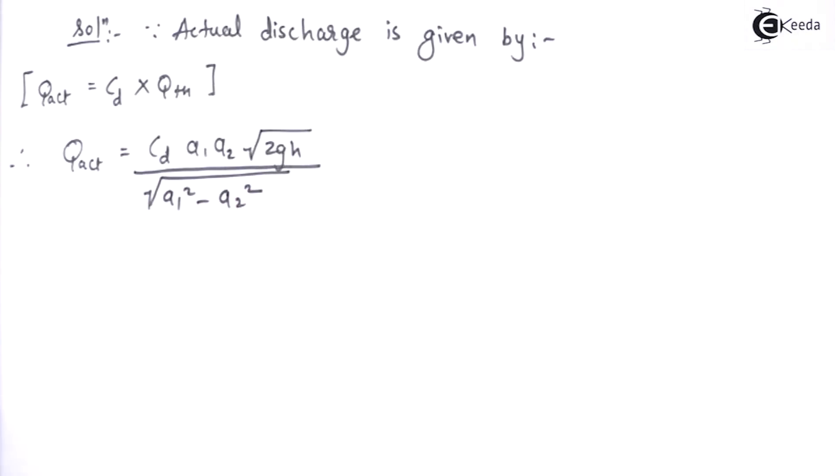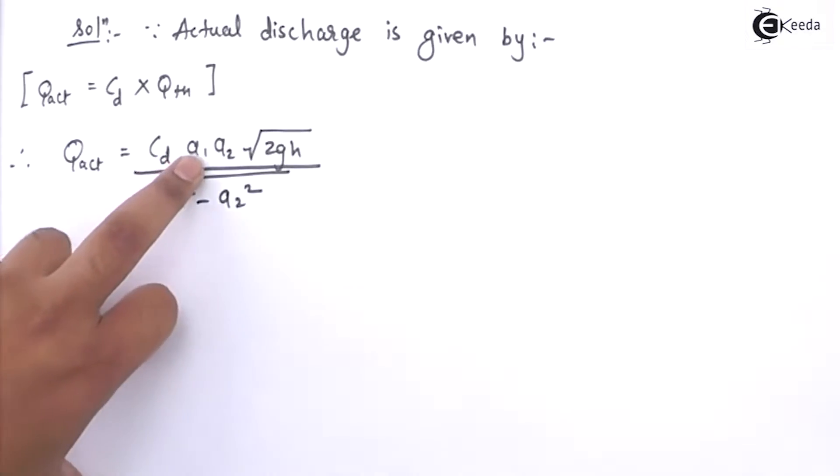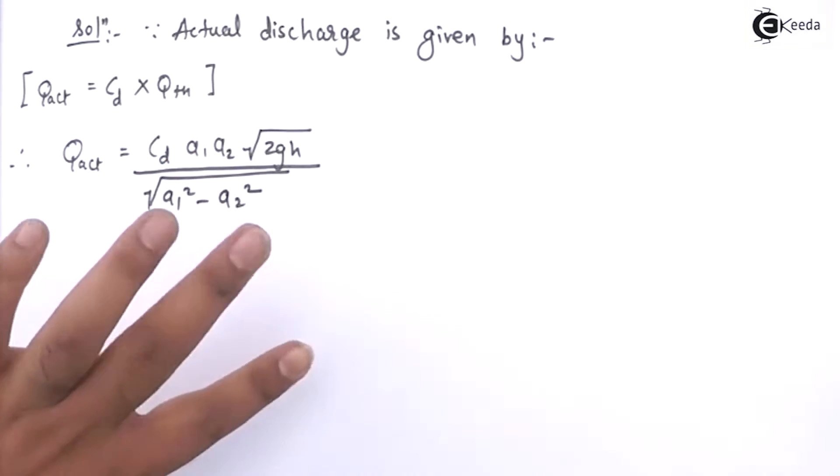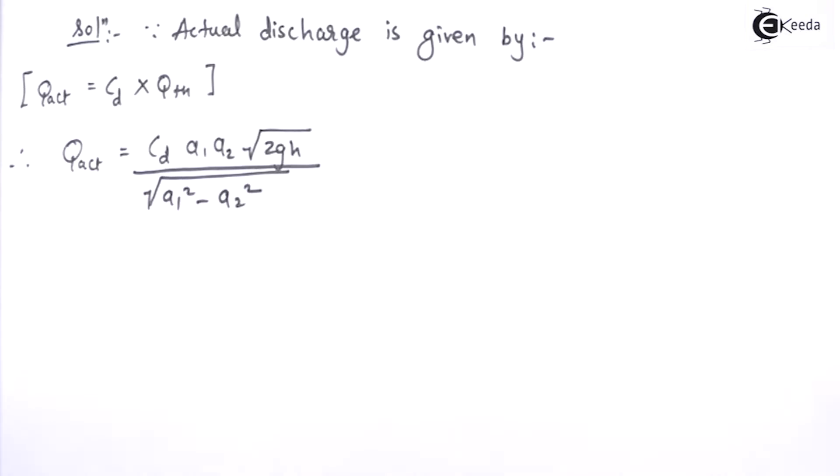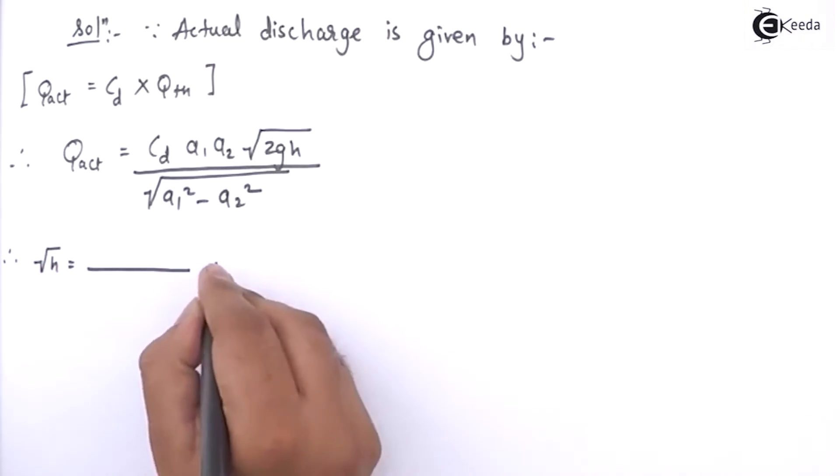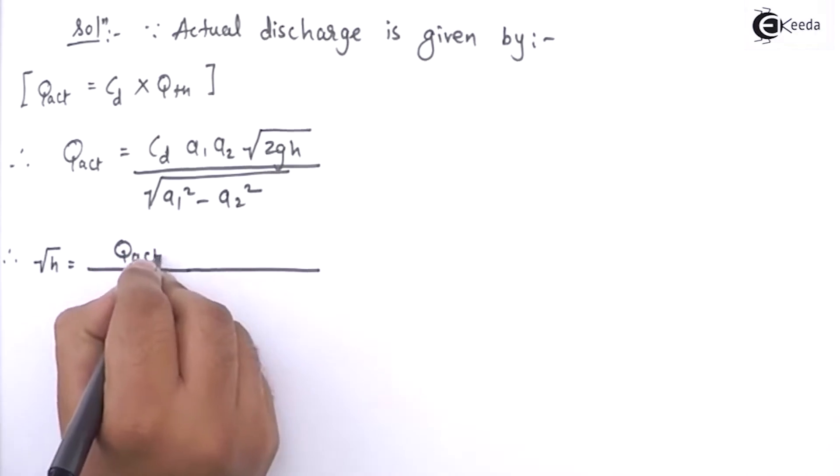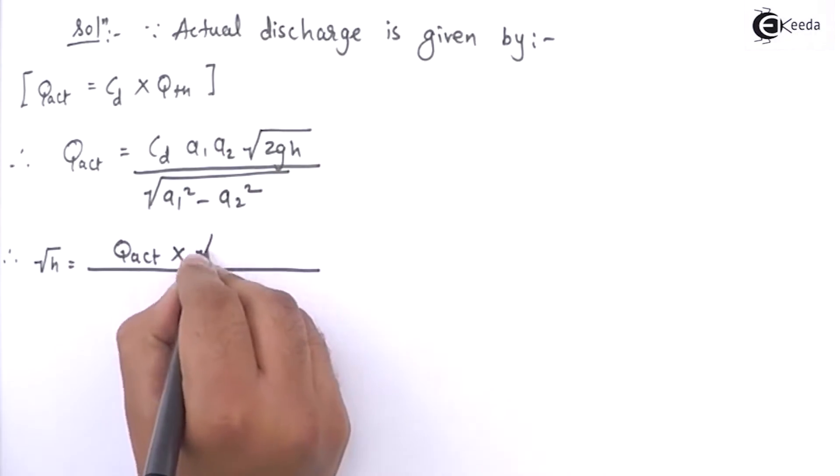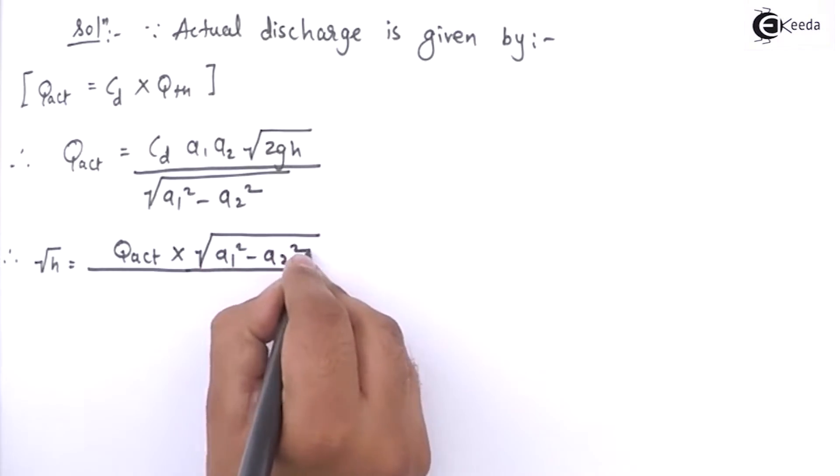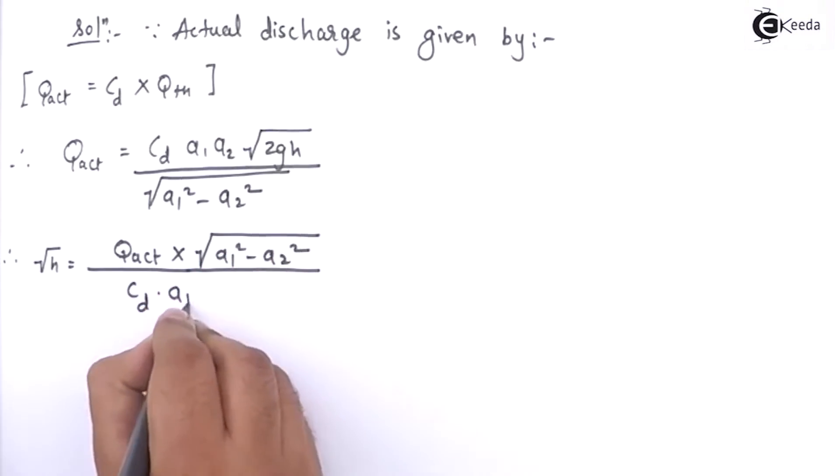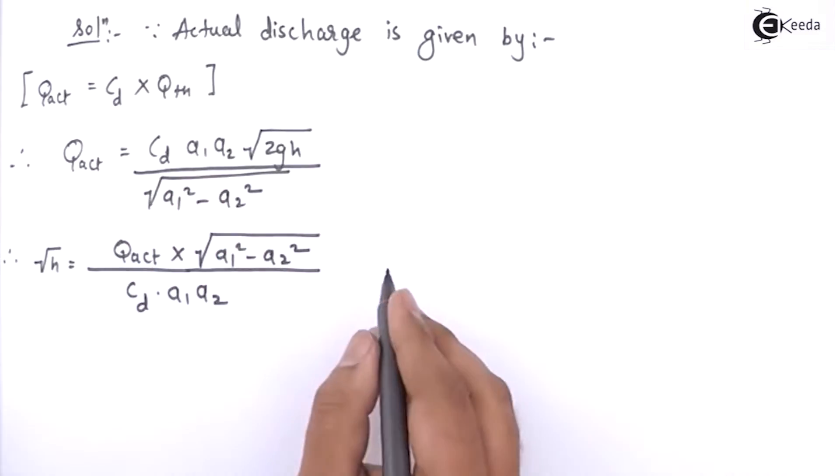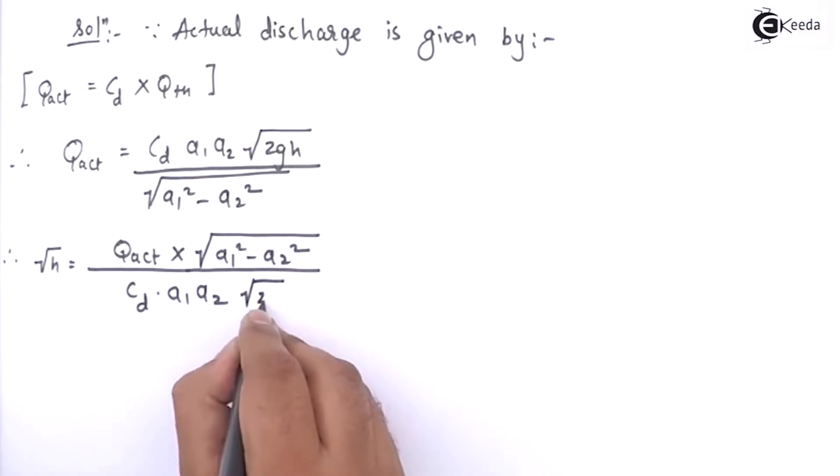Here actual discharge, CD, area 1, area 2 are given. 2 and g are constant, so I can find h. I will keep h on one side. Therefore, root h will be equal to Q-actual multiplied by this entire root term divided by CD A1 A2 and root of 2g.